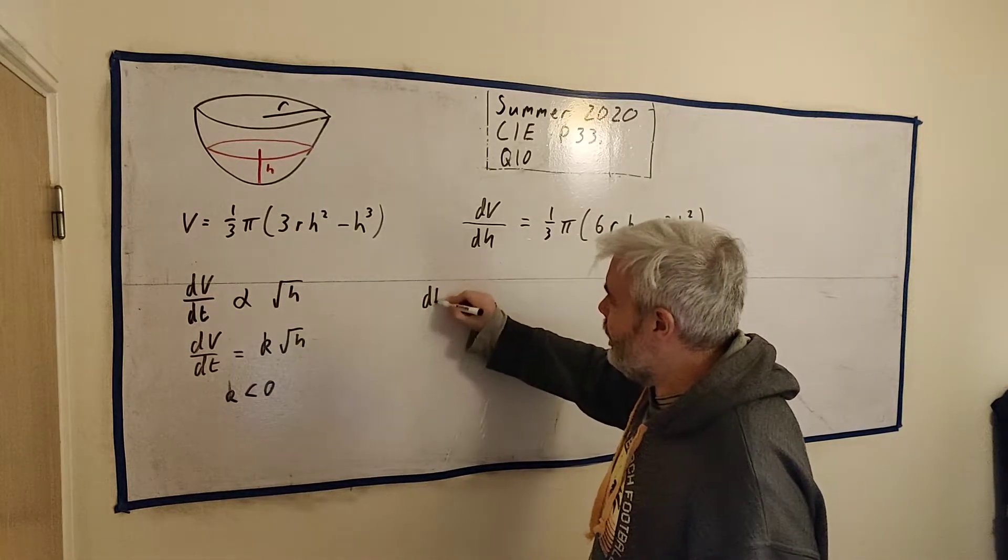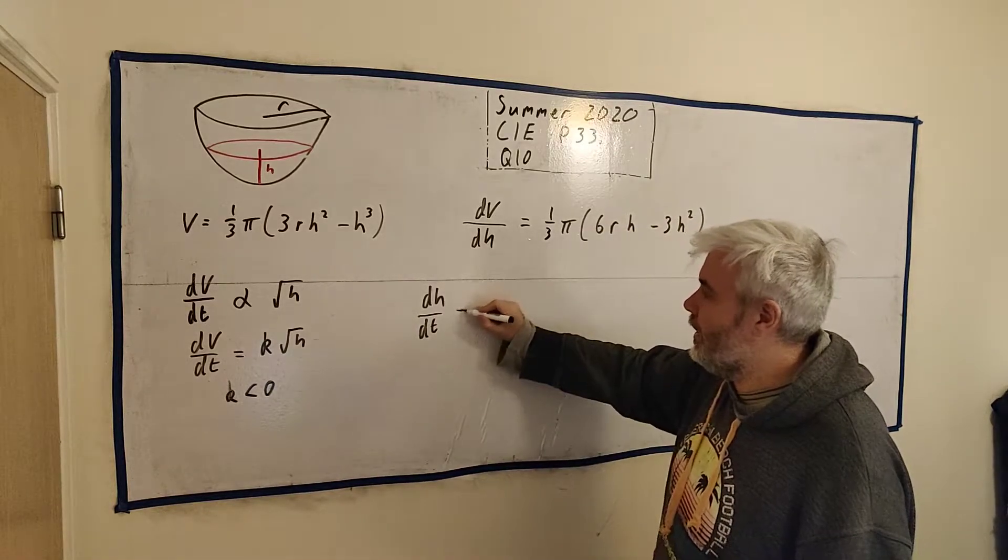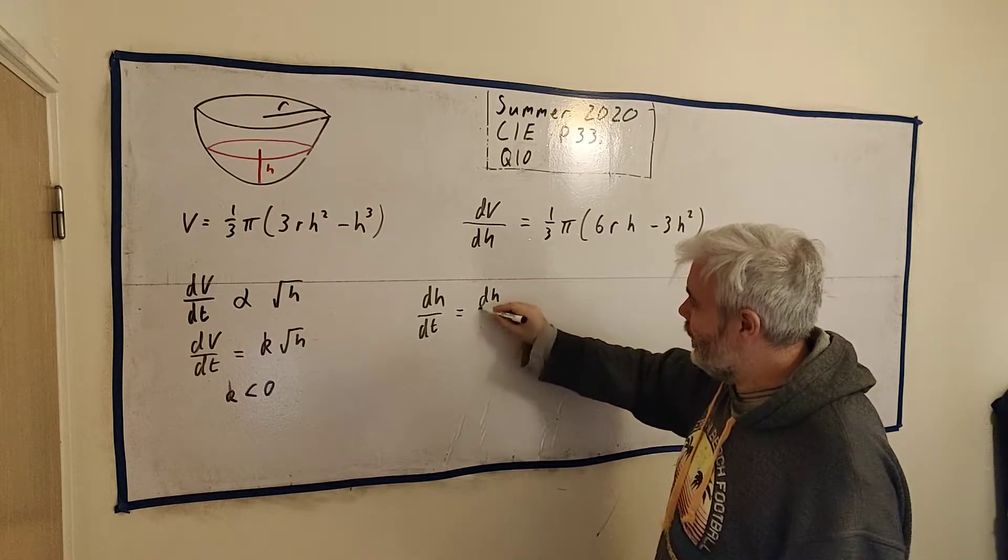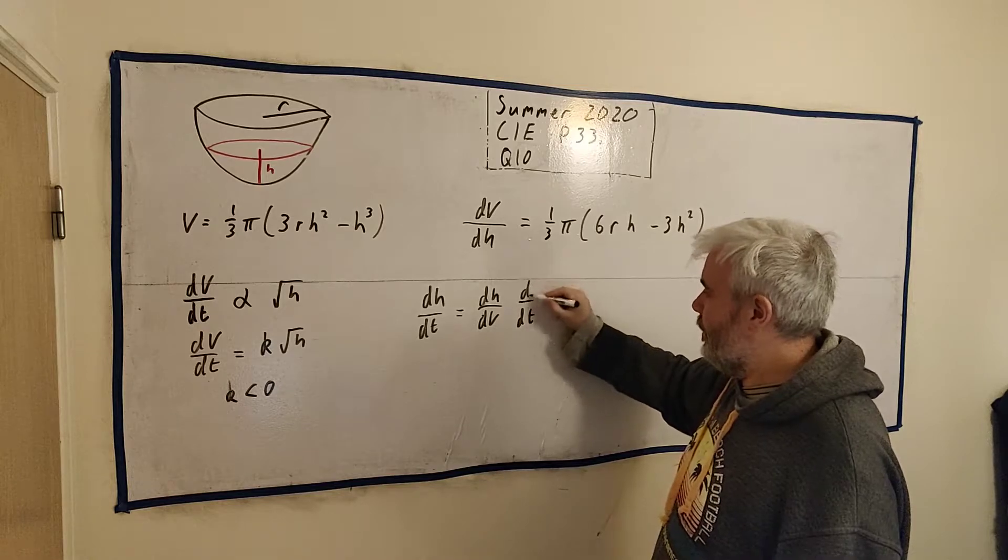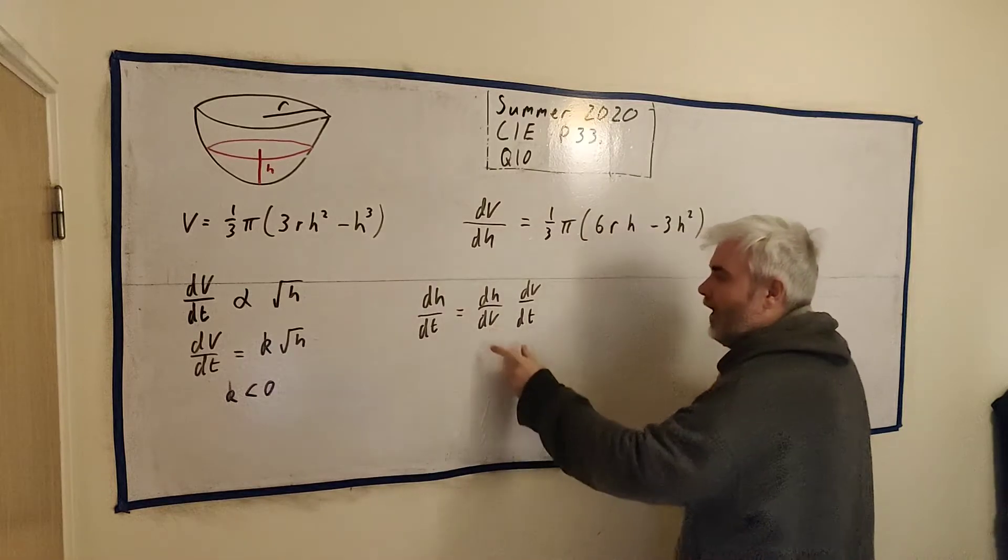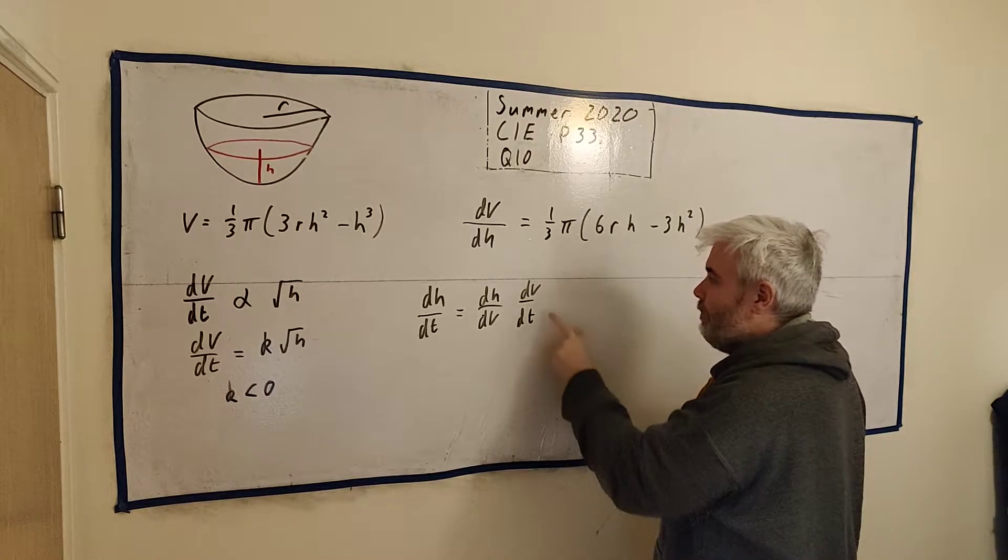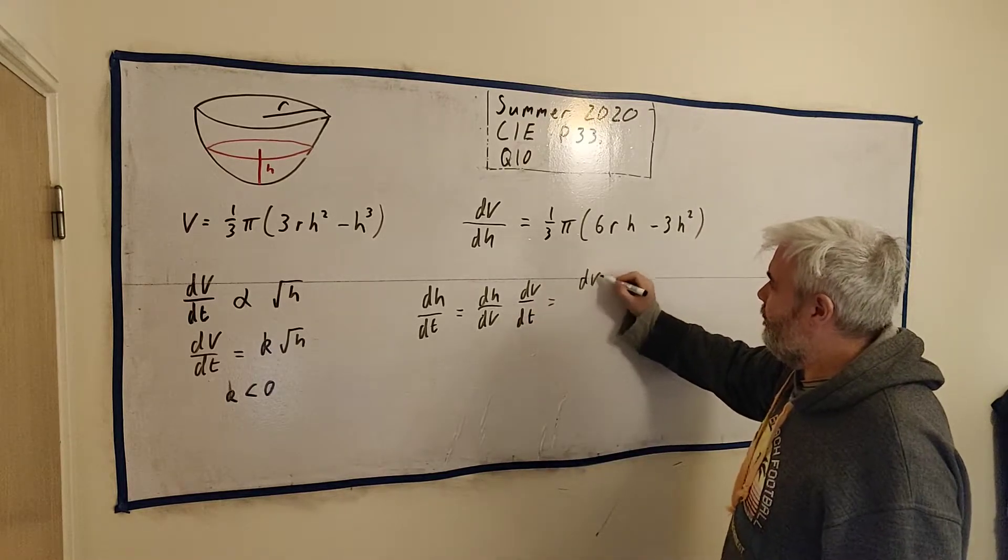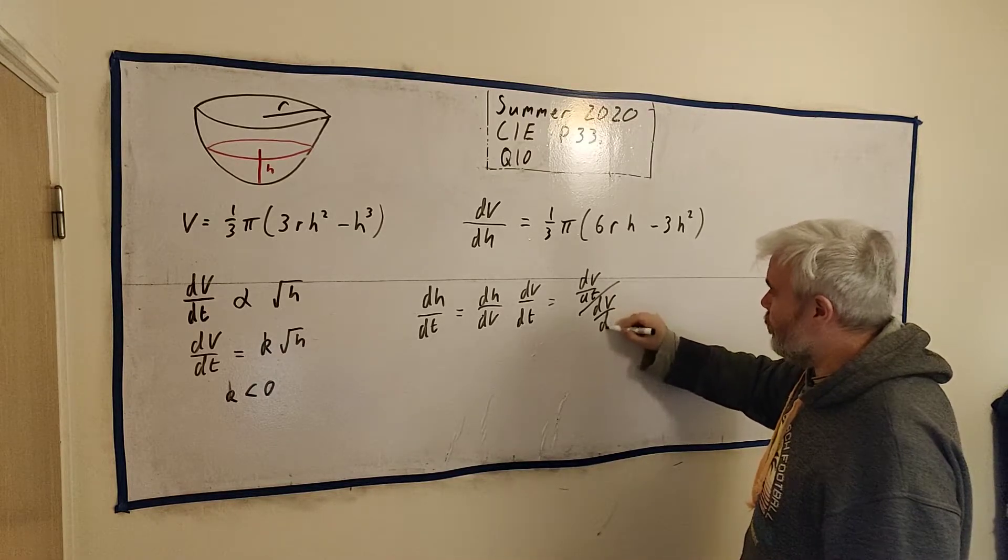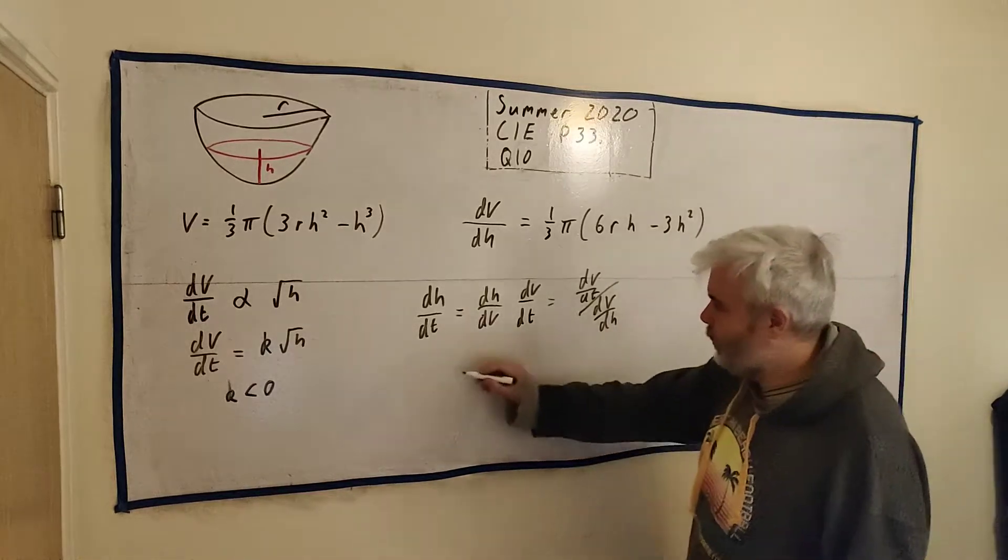Now we want dh/dt. This comes up a lot, so this is something you're expected to see quite easily. We can get dh/dt as dV/dt divided by dV/dh. And we have both. dV/dt is here, and dV/dh is just this. So if we just do this one divided by this one, they'll cancel out and we'll be left with dh/dt.